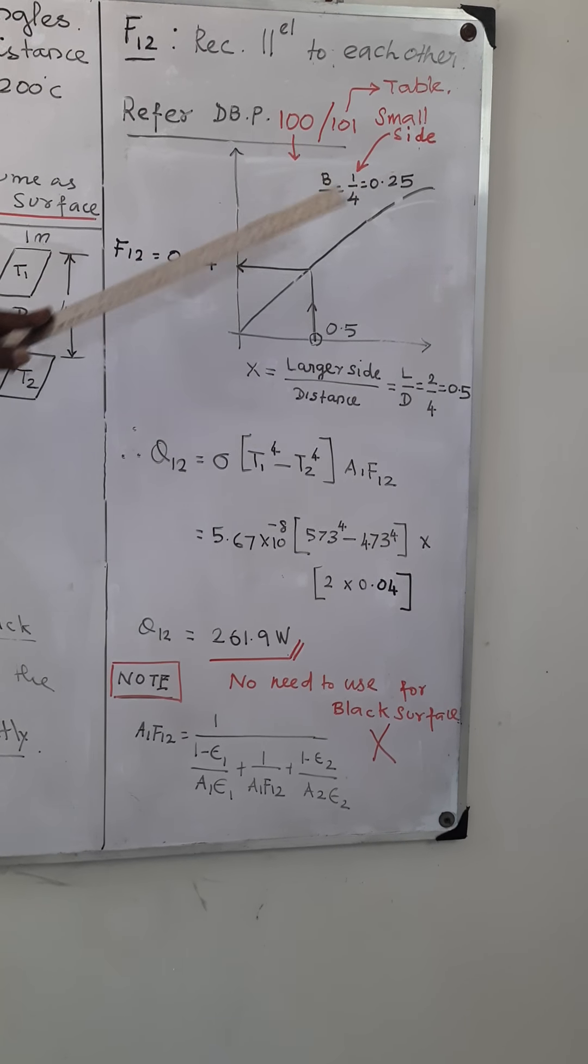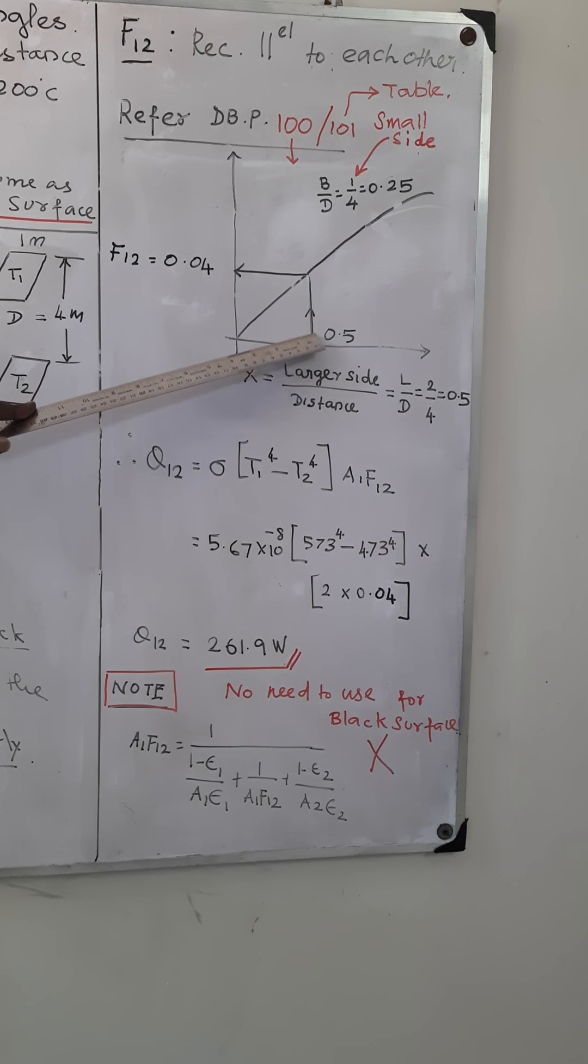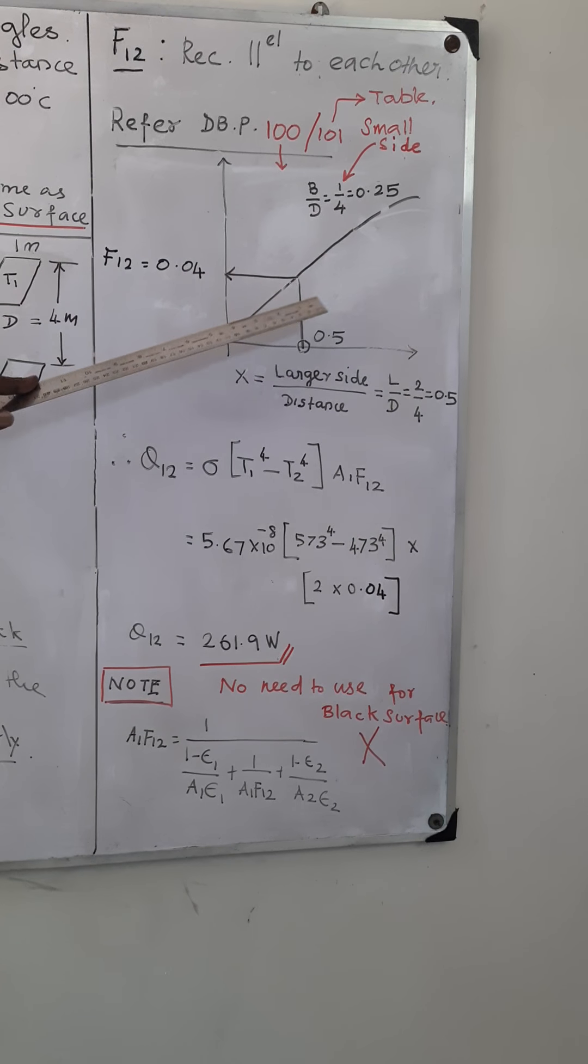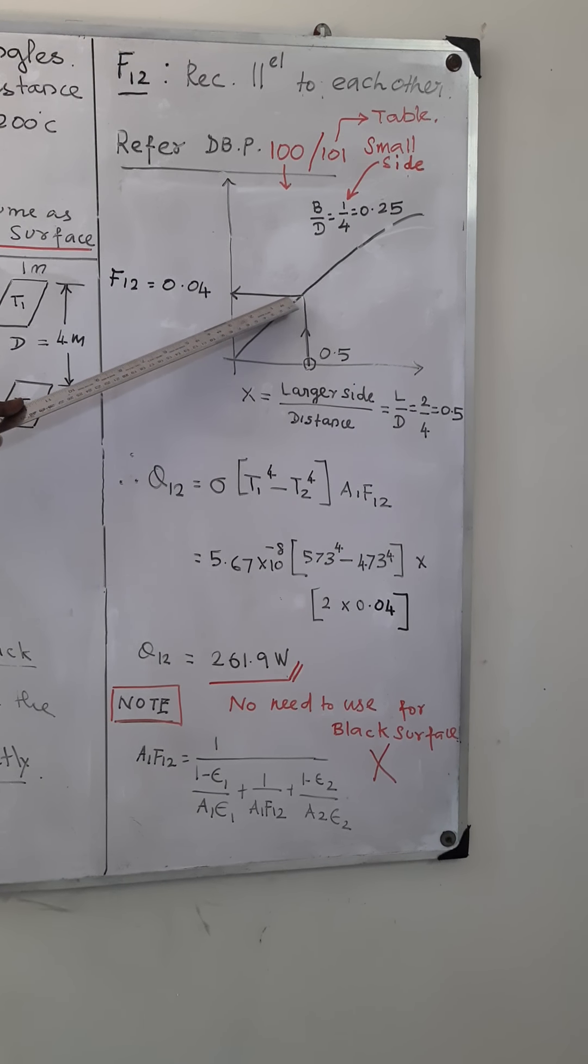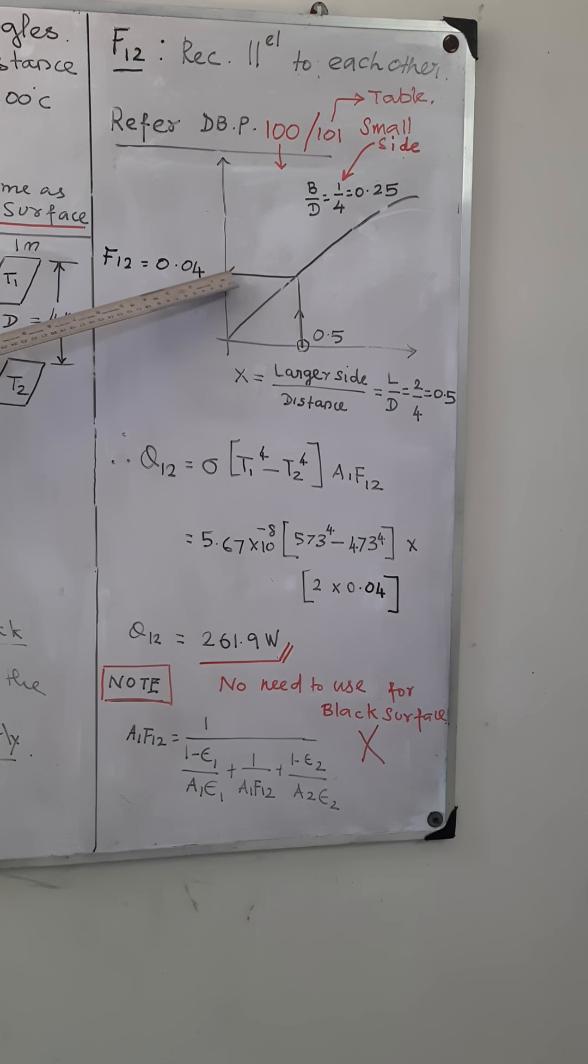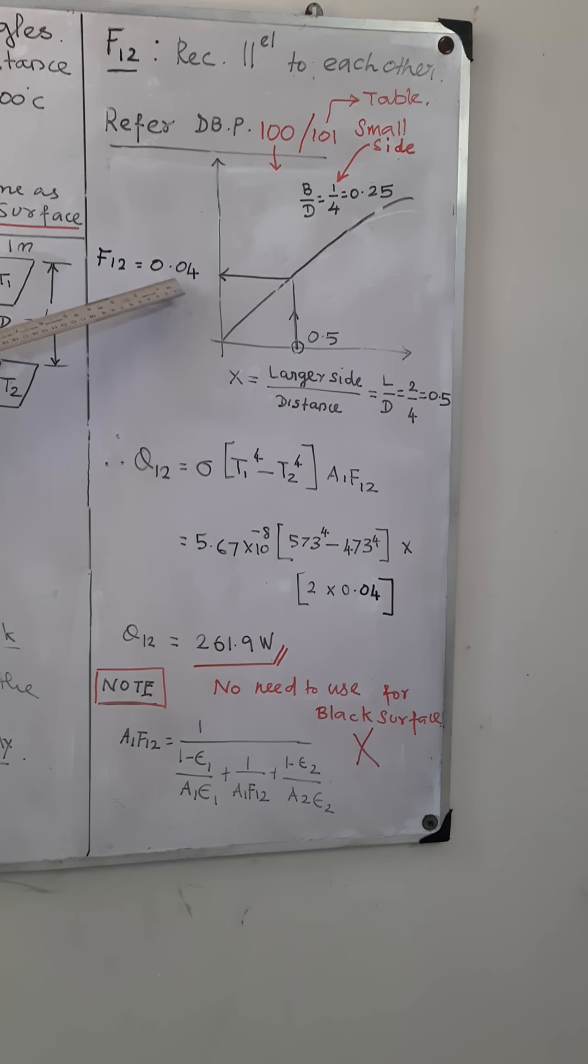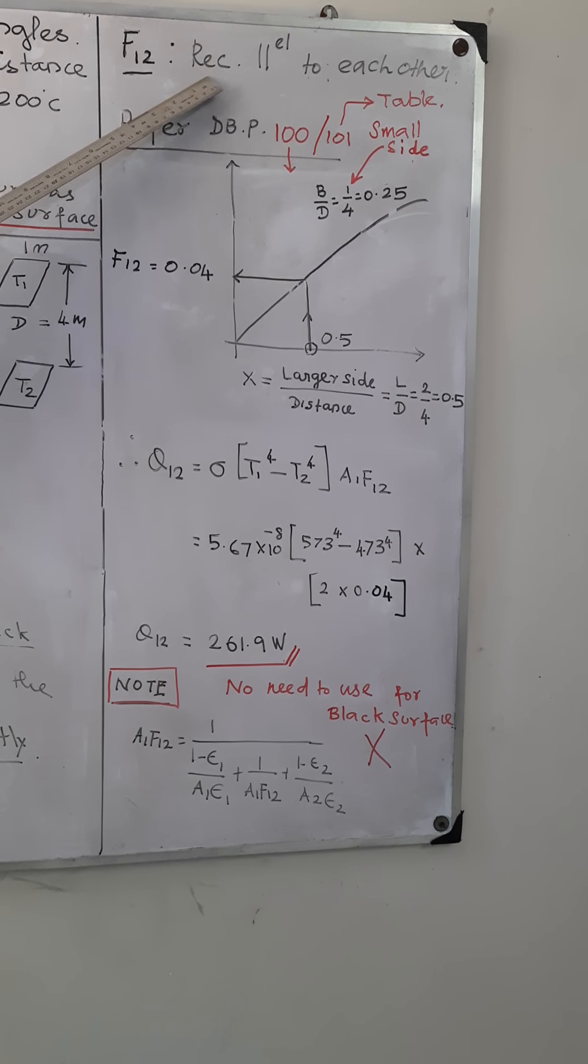So you have to fix your x-axis as 0.5 and go vertically upwards until your straight line reaches this 0.25 curve. That's the shape factor value. So you can read it on your y-axis, on the left side of this graph, at 0.04.